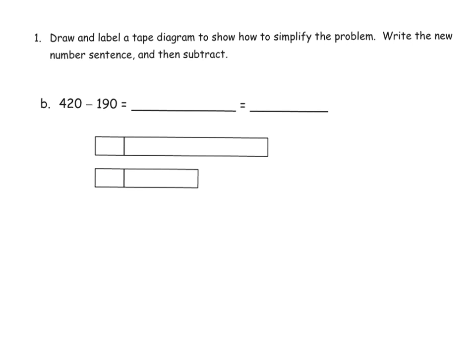So here, the original problem says 420 minus 190. Now 190 is really close to a milestone number. It's really close to 200. That's a landmark number. So what we're going to do is I'm going to label this as 420 and 190. And our subtraction problem right here is our answer. That's our answer.